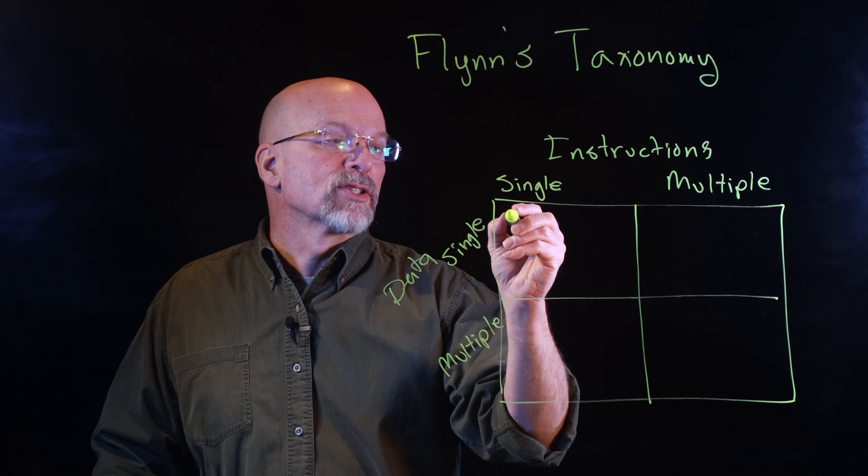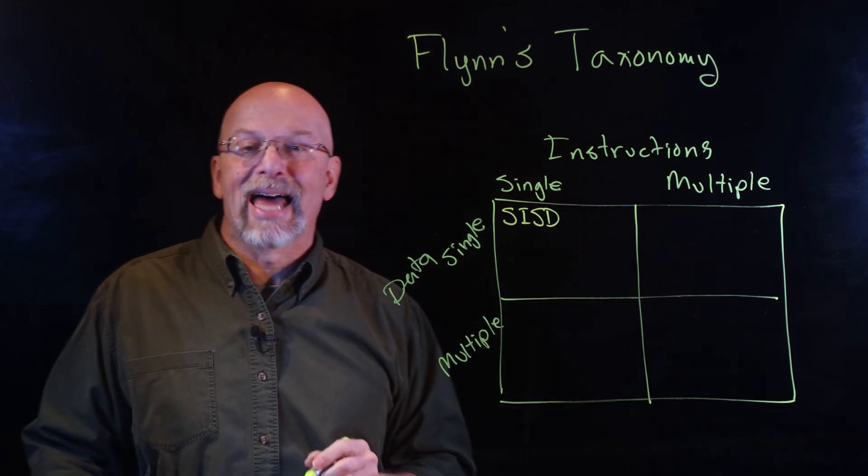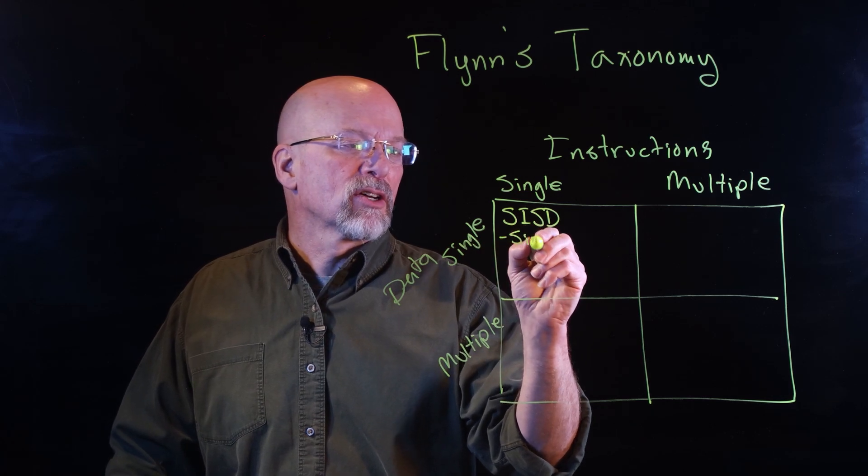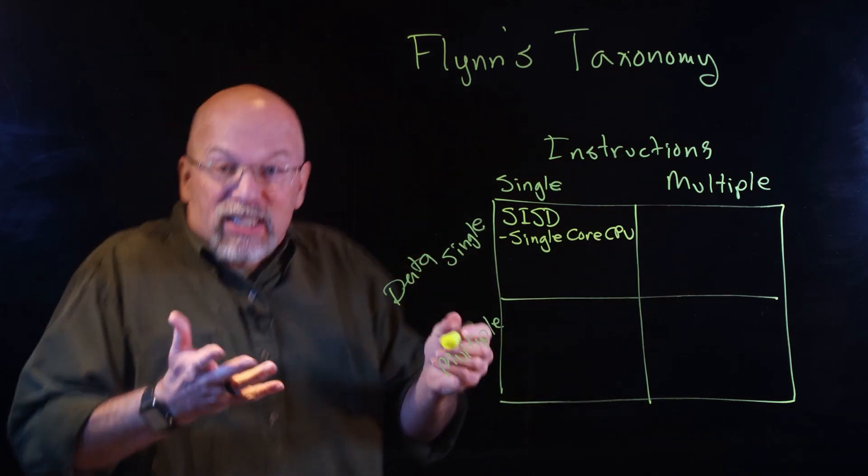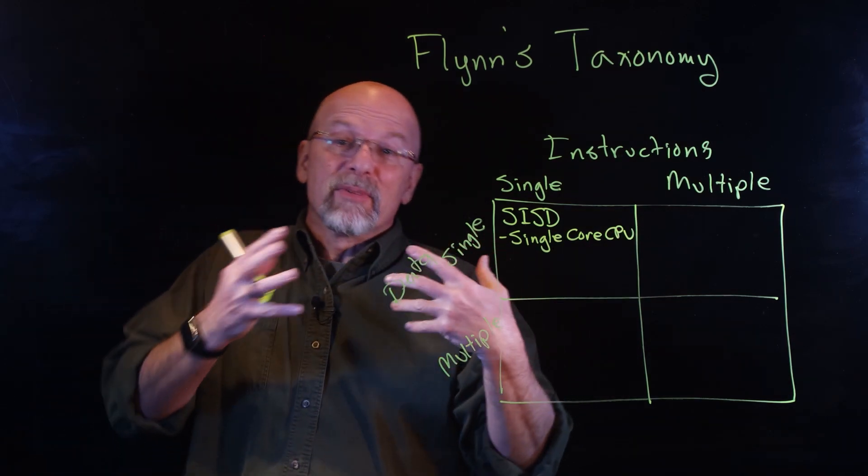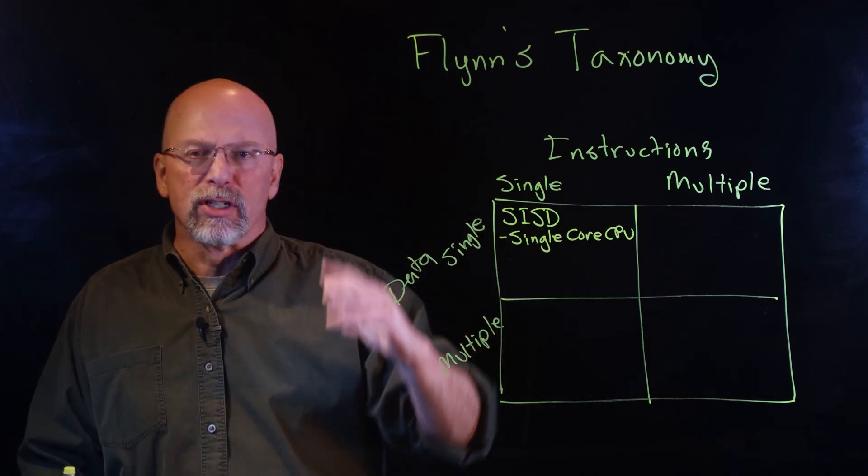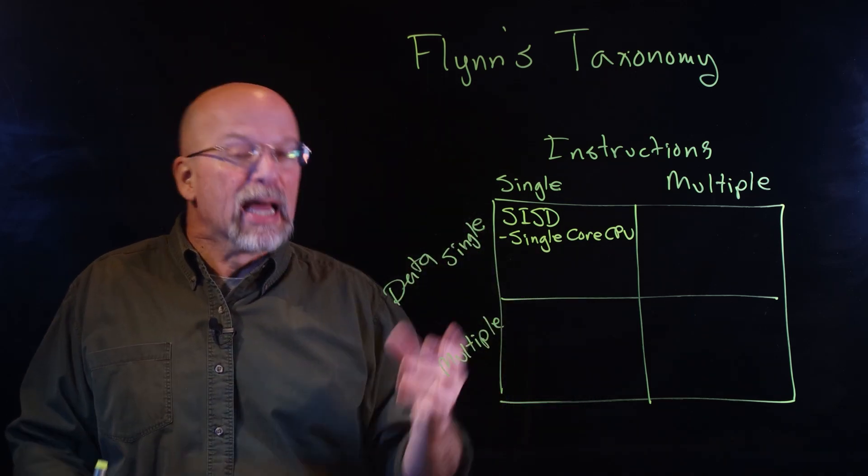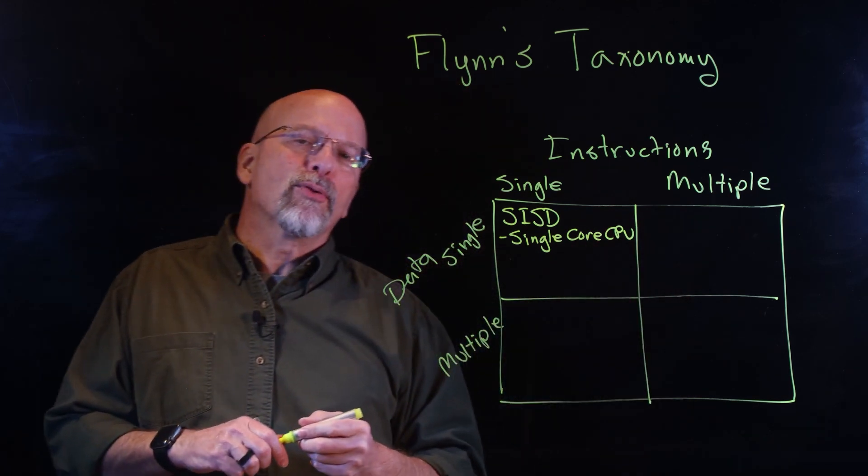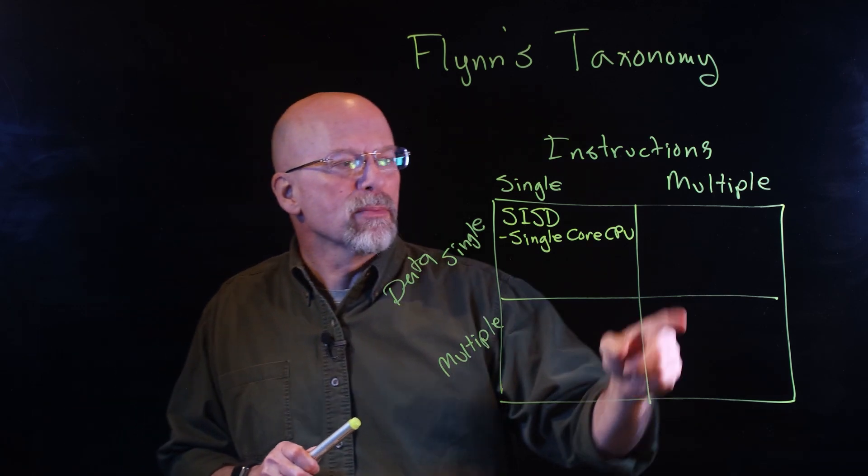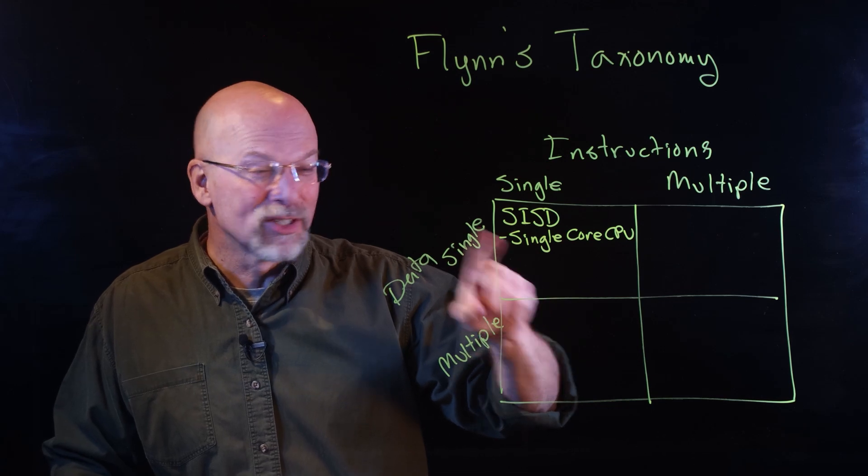If I've got a single instruction operating on a single piece of data, that's called single instruction, single data stream, SISD. This is basically a single core CPU. It's the machine that you're used to programming, where you've got this sequential order of operations that operates on some data in a single core. This is basically the motorcyclist, one motorcyclist on a single bike.